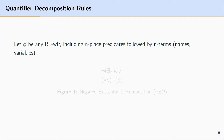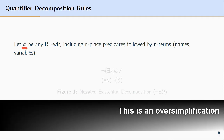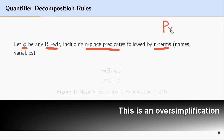As a kind of preliminary, let's let this symbol φ stand for any predicate logic well-formed formula, including n-placed predicates followed by n-terms. This would include statements like Px, if P was a one-place predicate, or Rxy, if R was a two-place predicate.